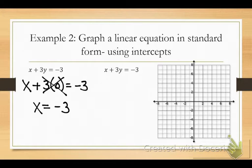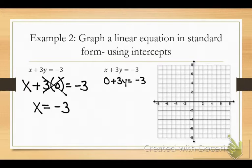If y equals zero and the y cancels out, my x value is negative 3. So if I want to solve for x and I plug in zero for y, what do you think happens on my second equation when I want to solve for y? I plug in zero for x. So: zero plus 3y equals negative 3. Divide both sides by 3, and y equals negative 1.